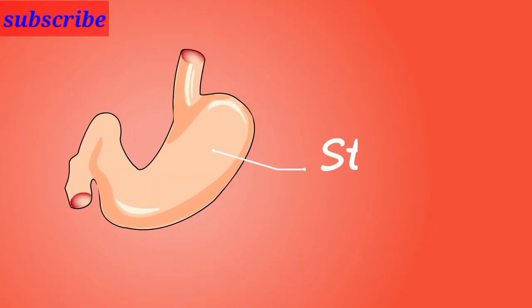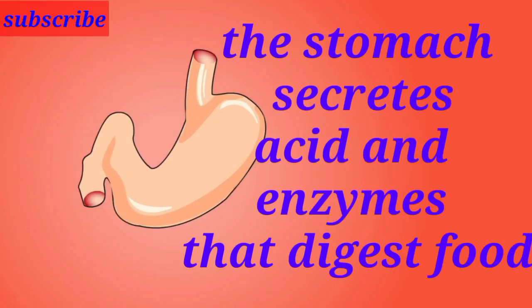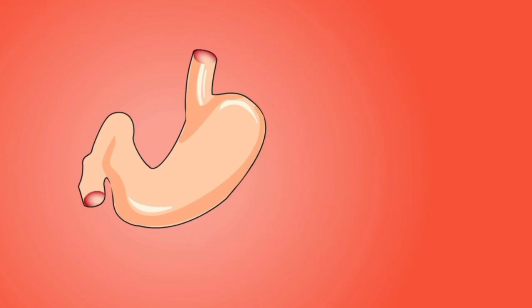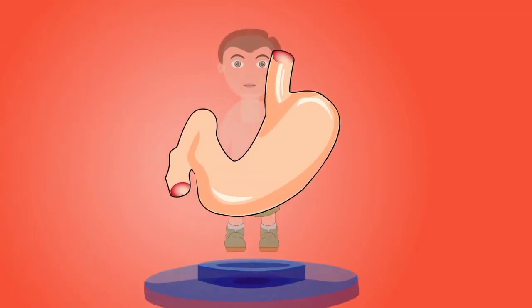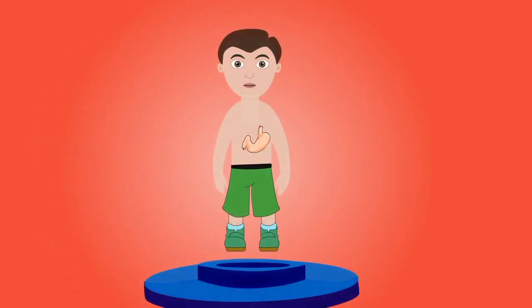The stomach secretes acid and enzymes that digest food. It grinds food and begins digestion by secreting gastric juices.